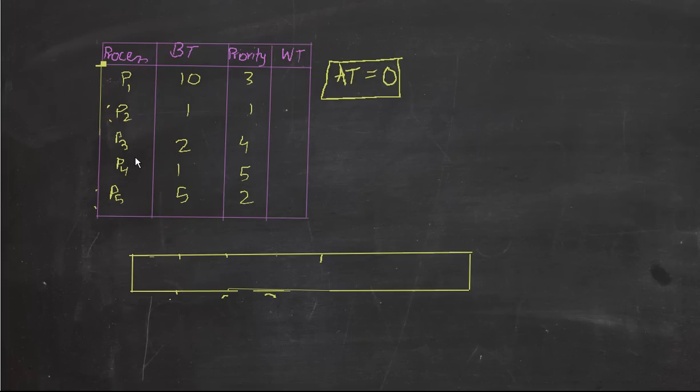Hello everyone, today we will be talking about the fourth CPU scheduling algorithm which is the priority scheduling and this is another easy algorithm just like the first come first serve algorithm.